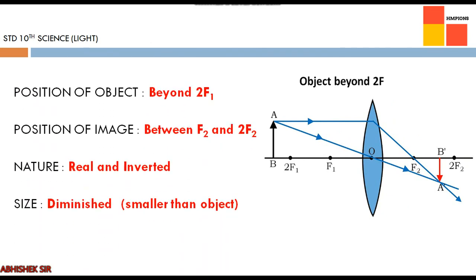Second case — object beyond 2f1: image is formed on the other side between f2 and 2f2, nature is real and inverted, and the size is diminished — slightly smaller than the object.